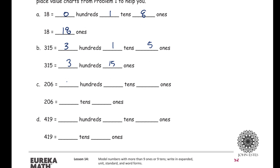Two hundred and six could be written as two hundreds, zero tens, and six ones. Be careful — when talking about tens and ones, two hundreds is the same as twenty tens and six ones. Then four hundred nineteen we could write as four hundreds, one ten, nine ones, or another way: forty-one tens and nine ones.